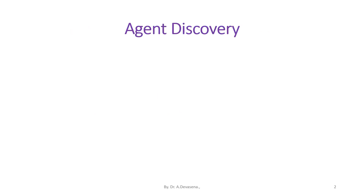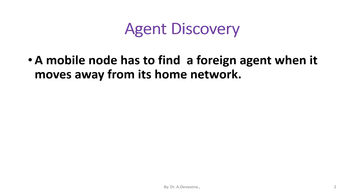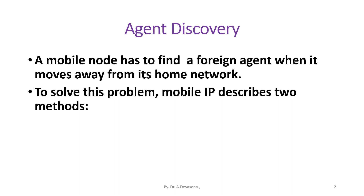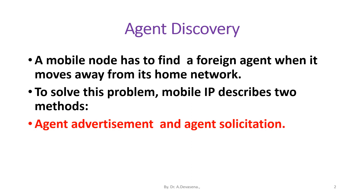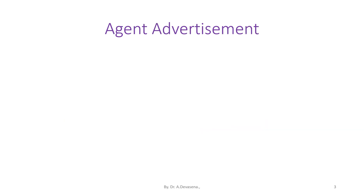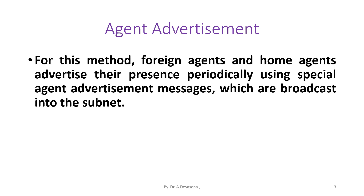Agent discovery: a mobile node has to find a foreign agent when it moves away from its home network. To solve this problem, Mobile IP describes two methods: agent advertisement and agent solicitation. Let us start discussing agent advertisement.